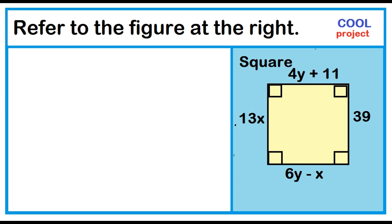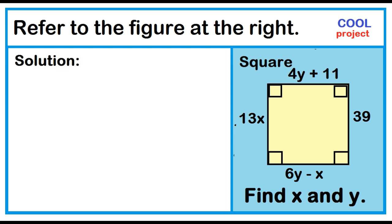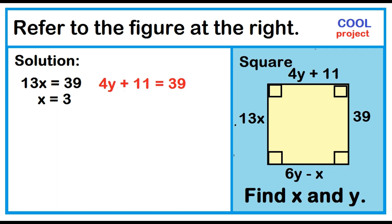Refer to the figure at the right. The figure is a square with the following lengths: 4y+11, 39, 6y−x, and 13x. Find x and y. Solution: All sides of a square are congruent. First equation: 13x = 39. Divide both sides by 13: x = 3. The other equation: 4y+11 = 39. Subtract 11 from both sides: 4y = 39−11 = 28. Divide both sides by 4: y = 7. Therefore, x = 3 and y = 7.